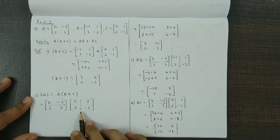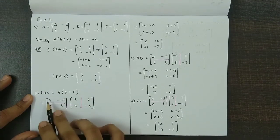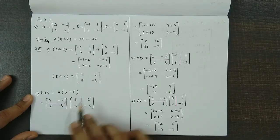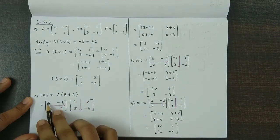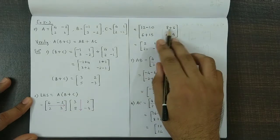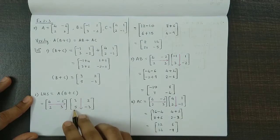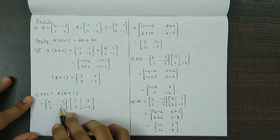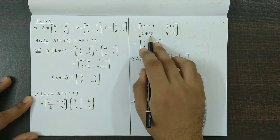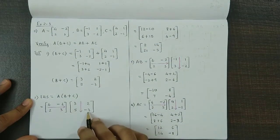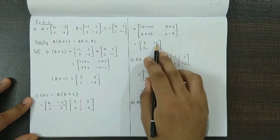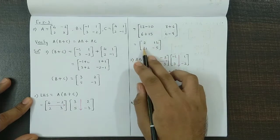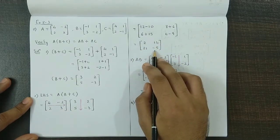First row, first column: 4 times 3 is 12, and minus 10, so 12 minus 10. Then R1 into C2: 4 times 2 is 8, and plus 6, so 8 plus 6. Then second row, column 2: 2 times 2 is 4, and minus 9, so 4 minus 9. The value for the left hand side is the matrix 2, 14, 21, minus 5.